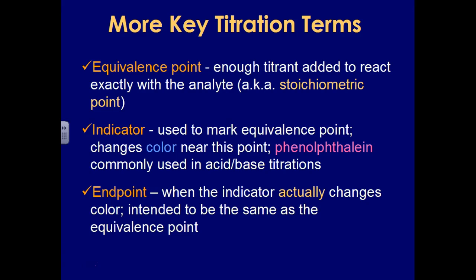Phenolphthalein is often used in weak acid, strong base titrations. It tends to change color around a pH of 8, and that's typically pretty close to what you would expect to see for a weak acid, strong base titration.